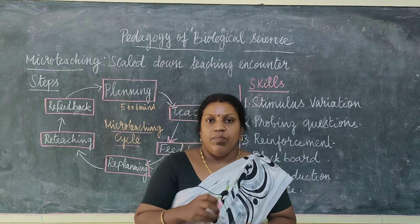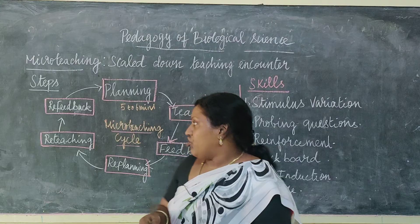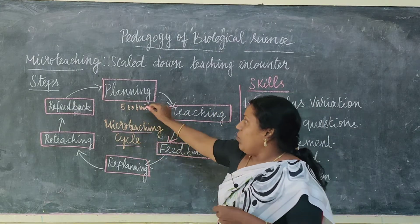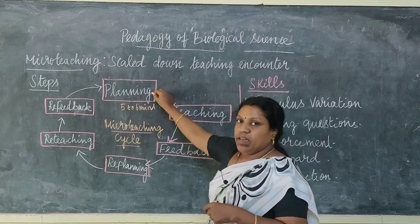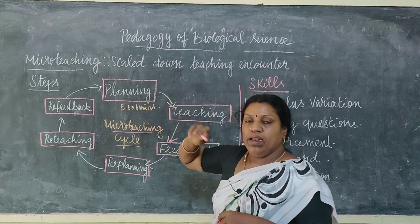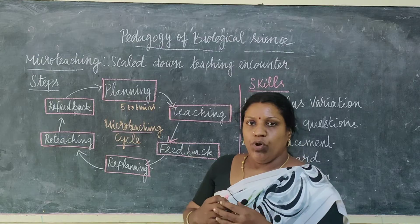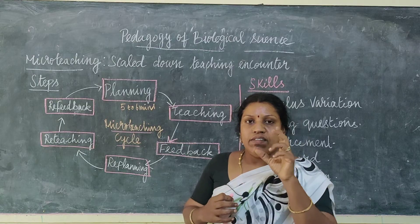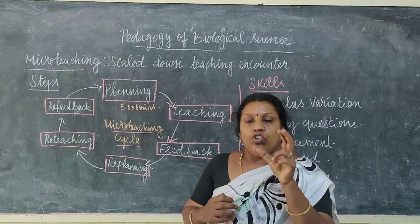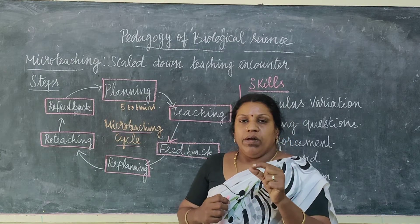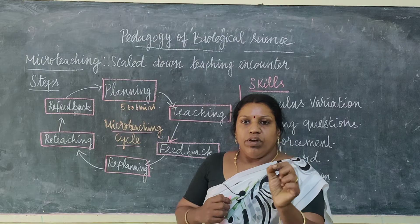Let us see what are the steps in micro teaching. There are several steps. Number one is planning. In planning, we decide a topic. For example, what is a cell? What is the definition of a cell? That is the planning stage — deciding what we are going to teach.